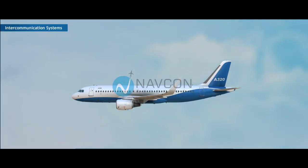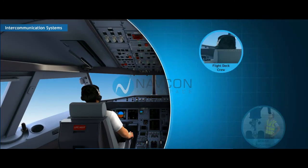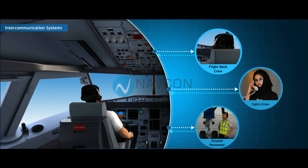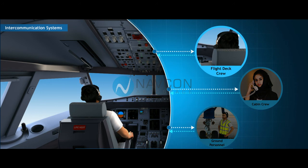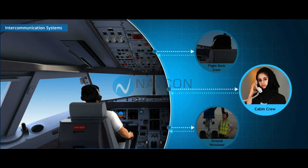Intercommunication Systems. The intercommunication systems allow the flight deck crew to selectively communicate among the flight deck crew, with ground personnel — for example during aircraft pushback — and with the cabin crew.